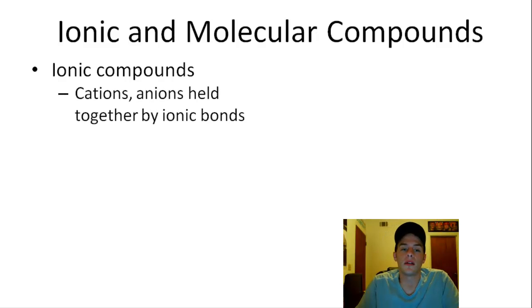Now ionic compounds consist of cations and anions, which are the positively and negatively charged ions, respectively. And those cations and anions are held together by ionic bonds. And what are these ionic bonds? Well, these ionic bonds are non-directional electrostatic interactions.